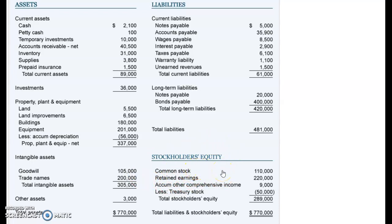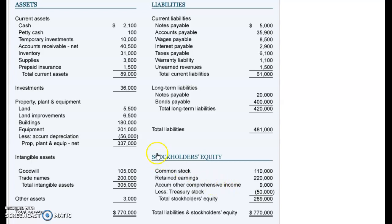Then you'll see your stockholders' equity section, which is the owner's equity in the business. It consists of initial equity, retained earnings, and other comprehensive income. This section's name depends on your entity type — for a partnership it might say members' equity, for a sole proprietorship it might say common equity — but overall it's called the stockholders' equity section.